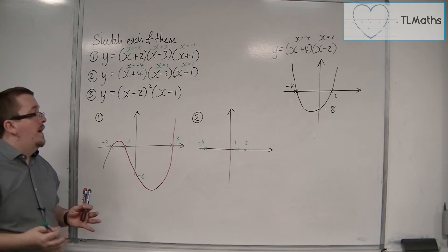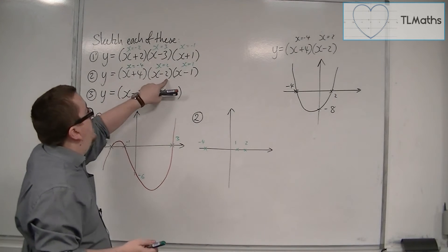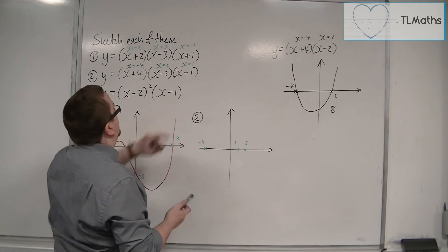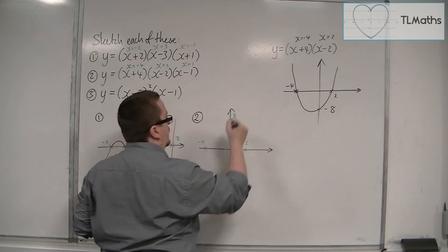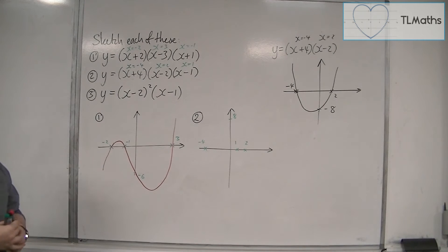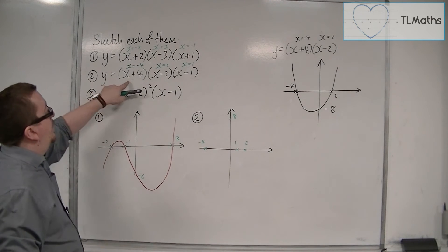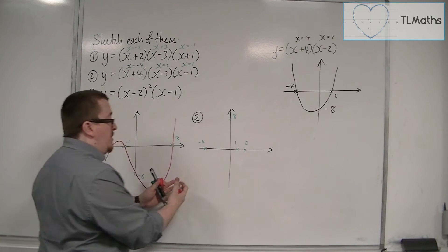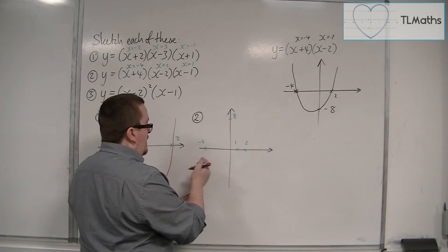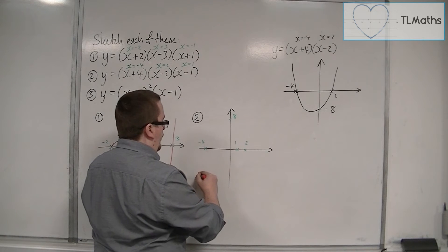Now, where is it crossing the y-axis? That's 4 times minus 2 times minus 1, so that's 8. Now, because if I multiply through the x's, I will get a positive x cubed, so it must start at the bottom left again to go through minus 4.